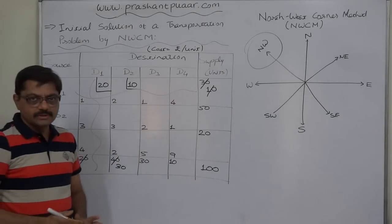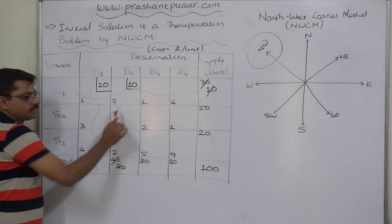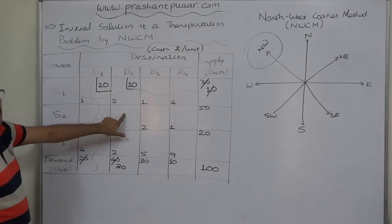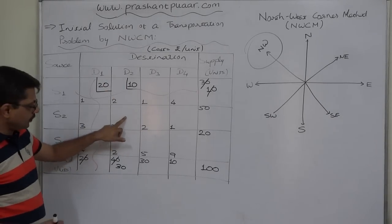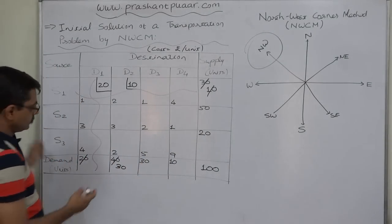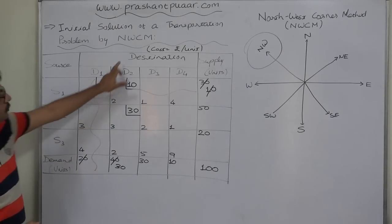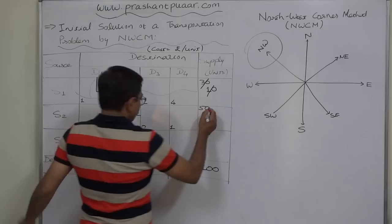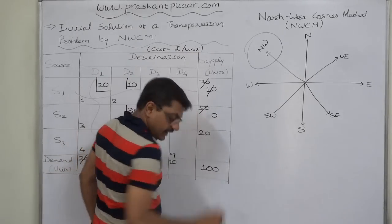We cancel row S1 since no supply is available from it. The remaining part of the transportation table has cell 22 as its northwest corner. We make allocation to cell 22 — from supply point S2 to destination D2. Demand is 30 units and supply is 50 units; whichever is lower is 30. So we transport 30 units from S2 to D2 at a cost of rupees 3 per unit. D2's demand is now satisfied, and S2 has 20 units of supply remaining.